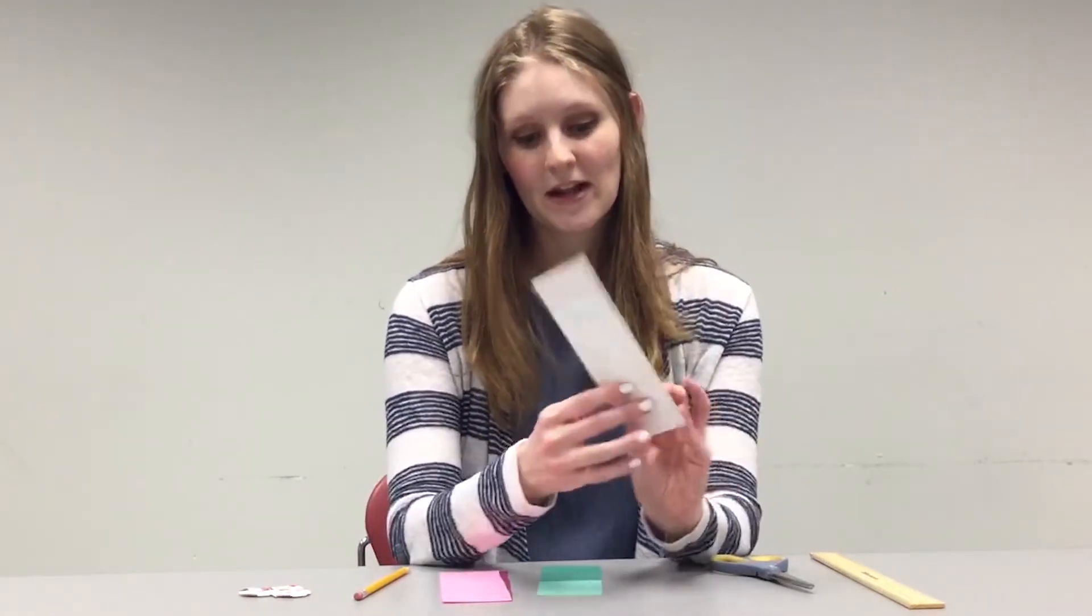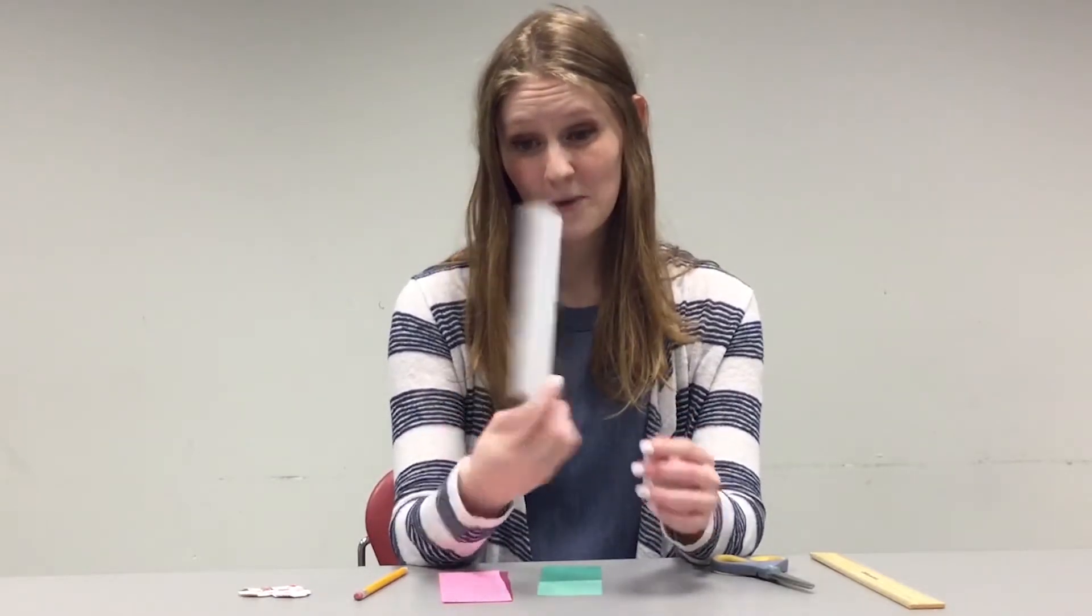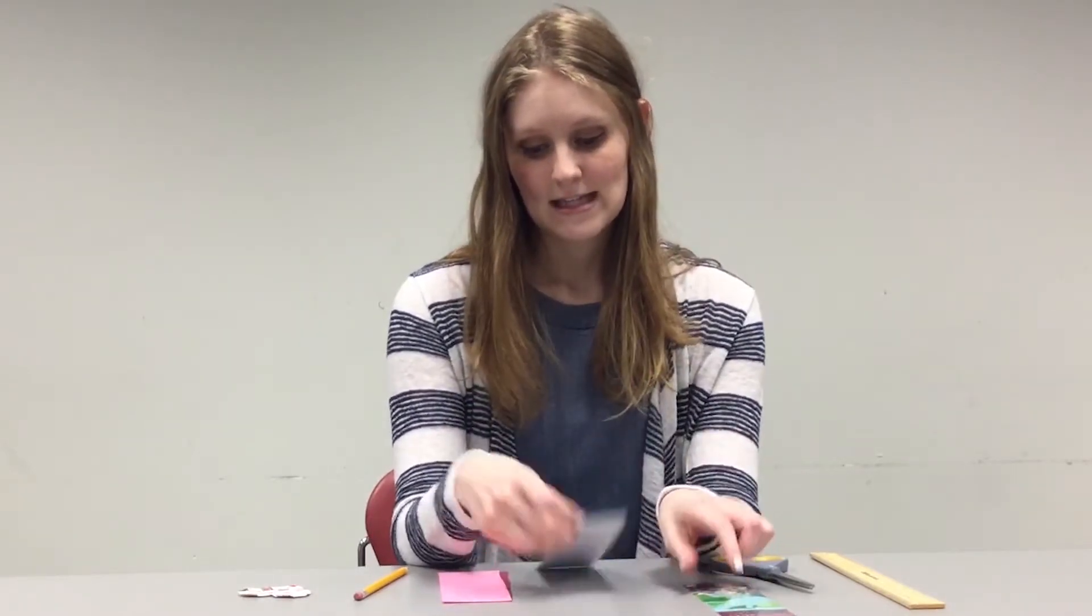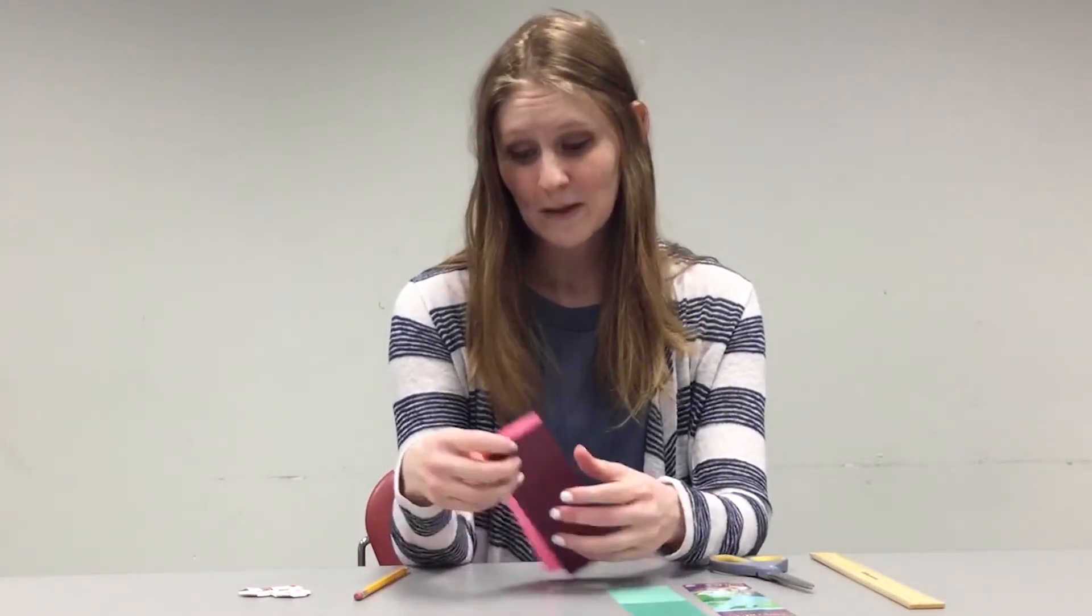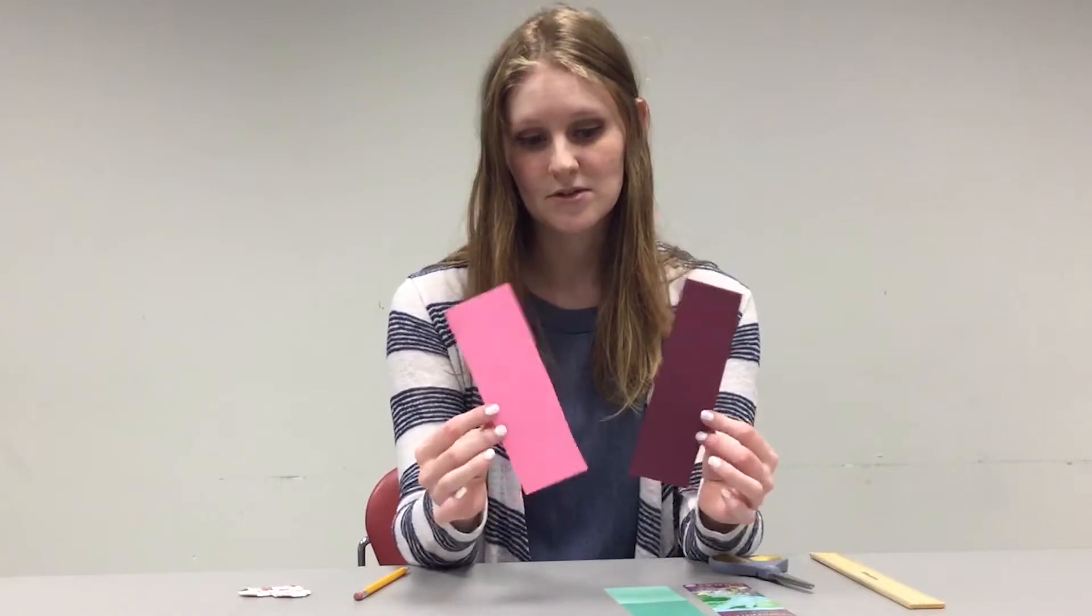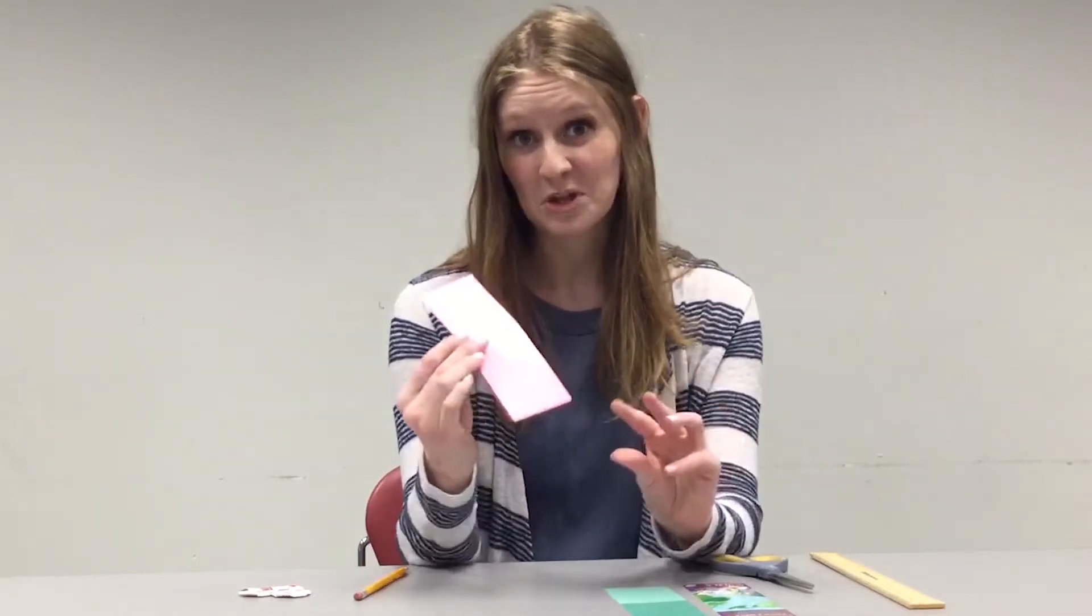This works best with paper that has two different colors on each side, so I can use scrapbook paper. This is scrapbook paper so it's green on one side and white on the other. If you only have construction paper, you can cut out two little rectangles and then glue them together and it works just the same.